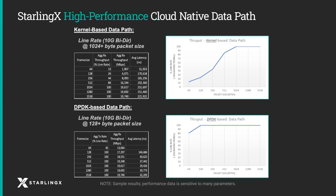With 10GB of traffic going in each direction and running the standard kernel, the kernel-based datapath achieves line rate at a packet size of 1024 bytes and above, while the DPDK-based datapath achieves line rate at packet sizes as small as 128 bytes.